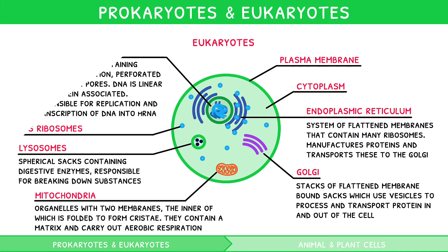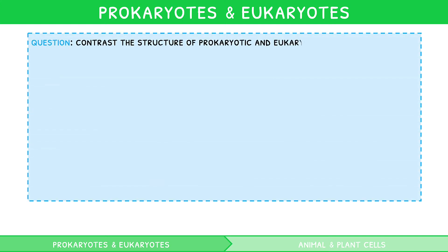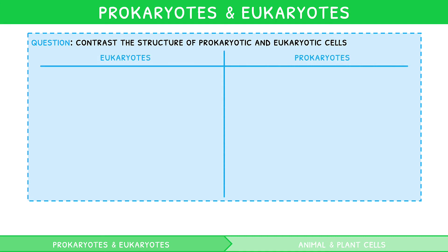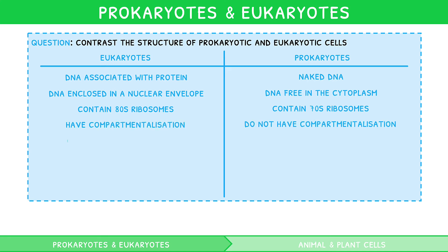A very common exam question asks you to contrast the structure of prokaryotic and eukaryotic cells. Remembering that contrast means highlight the differences, let's quickly make a table. Eukaryotes have DNA associated with protein, whereas prokaryotes have naked DNA. Eukaryotes have DNA enclosed in a nuclear envelope, whereas prokaryotes have DNA free in the cytoplasm. Eukaryotes have 80S ribosomes, whereas prokaryotes have 70S ribosomes. Eukaryotes have compartmentalisation, whereas prokaryotes do not. Eukaryotes contain introns and exons, whereas prokaryotes do not.